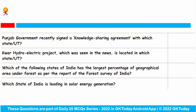Punjab government recently signed a knowledge sharing agreement with which state or union territory? Delhi Chief Minister Arvind Kejriwal and his Punjab counterpart Bhagwant Singh Mann have signed a knowledge sharing agreement. As part of the agreement, 117 schools and Mohalla clinics will be developed in Punjab. Punjab can learn from Delhi in the fields of education, health and power, while Delhi can learn from Punjab about agriculture. The correct answer is New Delhi.